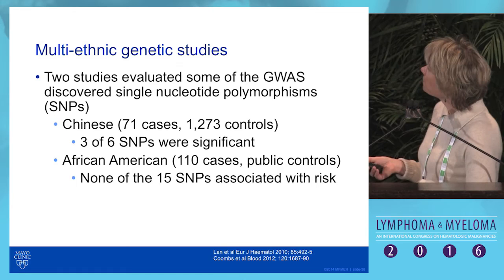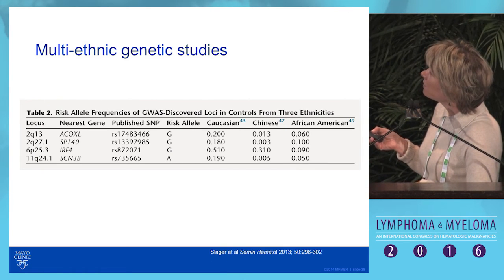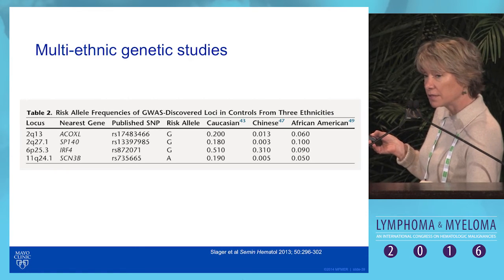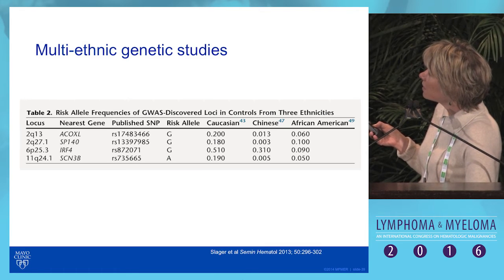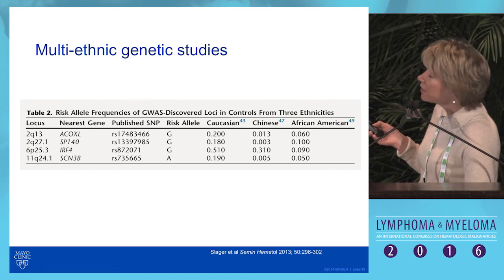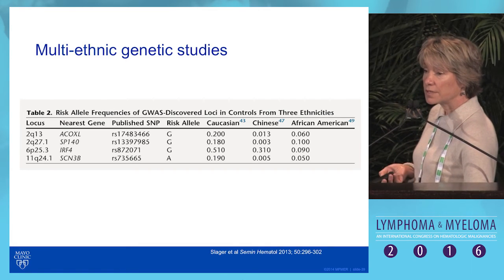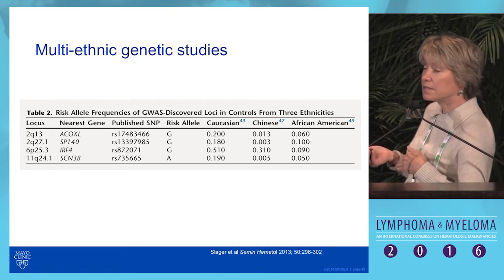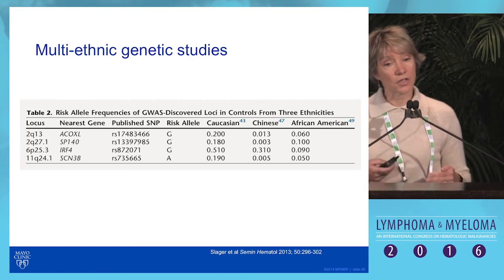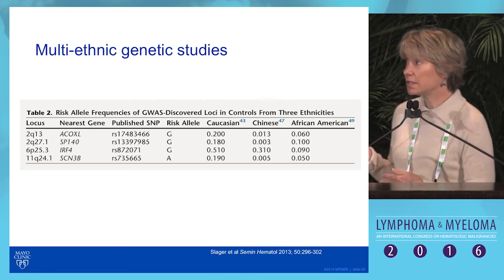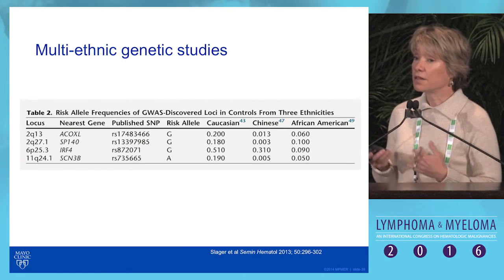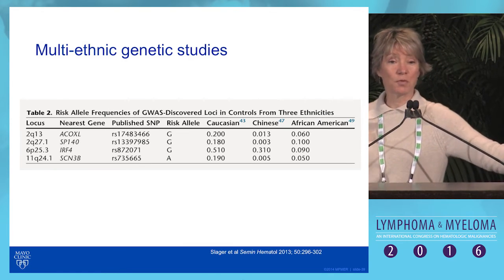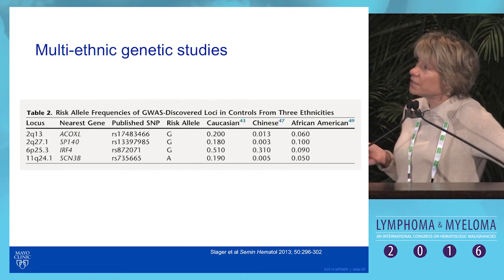Why is that? Looking at four of the Caucasian variants — common with more than 20% frequency in Caucasians — the Chinese allele frequencies are quite rare for three out of four, and African American frequencies are also uncommon at less than 10%. This suggests different genetic variants are actually associated with or causing CLL in different ethnicities. Conducting these studies in Asians and African Americans will require large sample sizes and an international consortium.